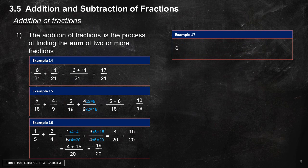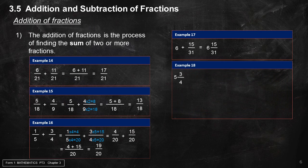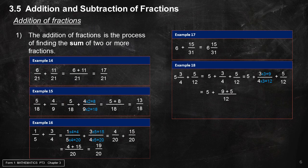Example 17: 6 plus 15 over 31 equals 6 and 15 over 31. Example 18: 5 and 3 over 4 plus 5 over 12 equals 5 plus 3 over 4 plus 5 over 12. Downscale 14 over 12 to 7 over 6, which gives 5 plus 7 over 6. Convert 7 over 6 to 1 and 1 over 6, giving a final answer of 6 and 1 over 6.